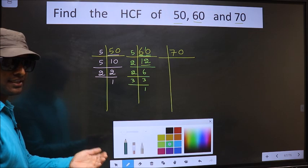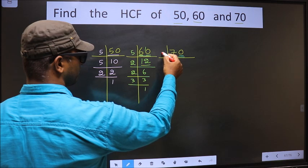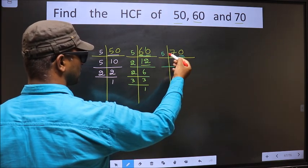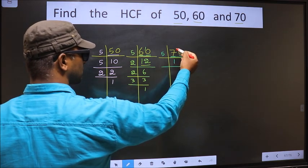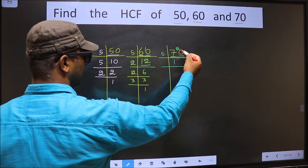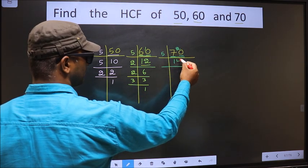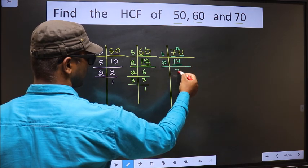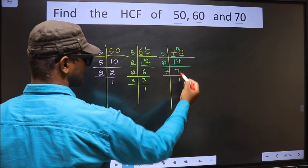Now the other number 70. Last digit is 0 so we take 5 here. The first number 7, a number close to 7 in 5 table is 5 times 1 is 5. 7 minus 5 is 2, carried forward making it 20. When do we get 20 in 5 table? 5 times 4 is 20. Here we have 14, 14 is 2 times 7. Now 7 is a prime number so 7 times 1 is 7.